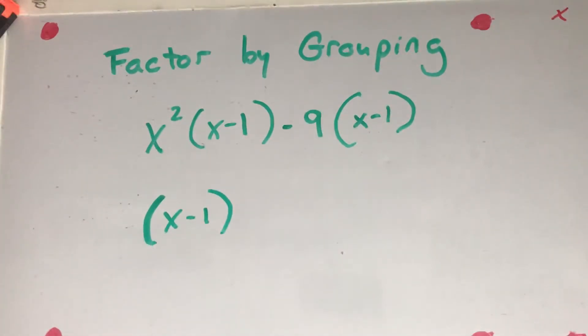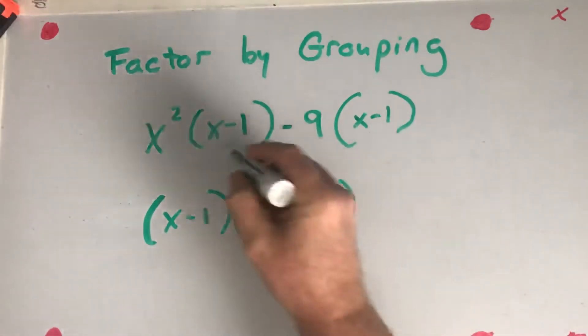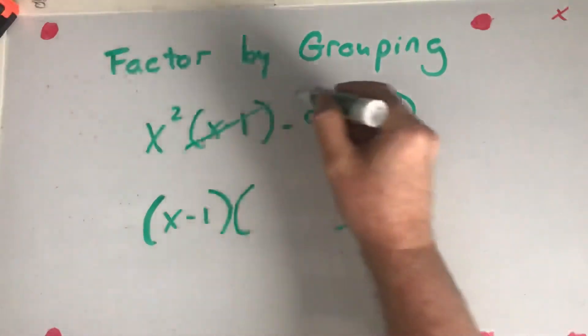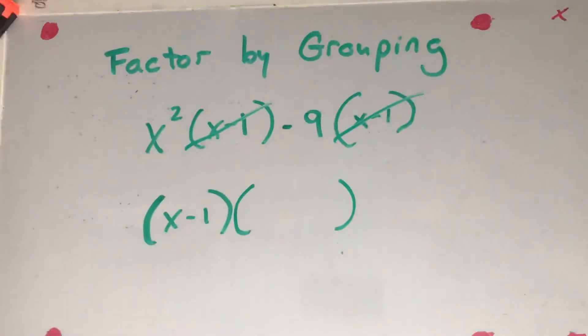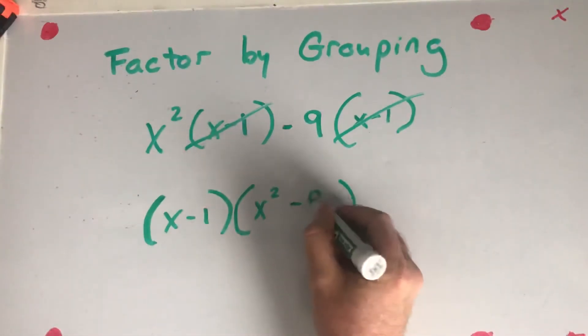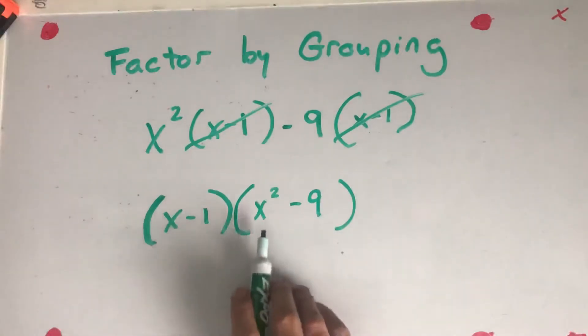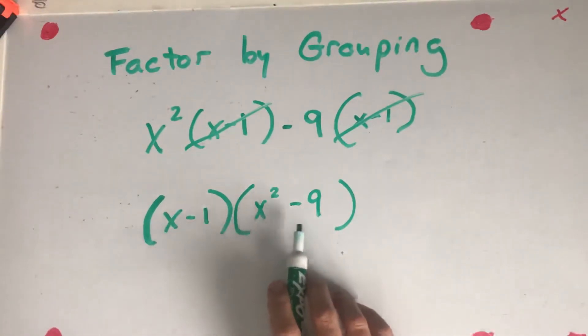And then I can look to see what is left. So if I take out the (x minus 1) from both terms, notice that there is x squared minus 9. But it is not done yet because I can still factor x squared minus 9.